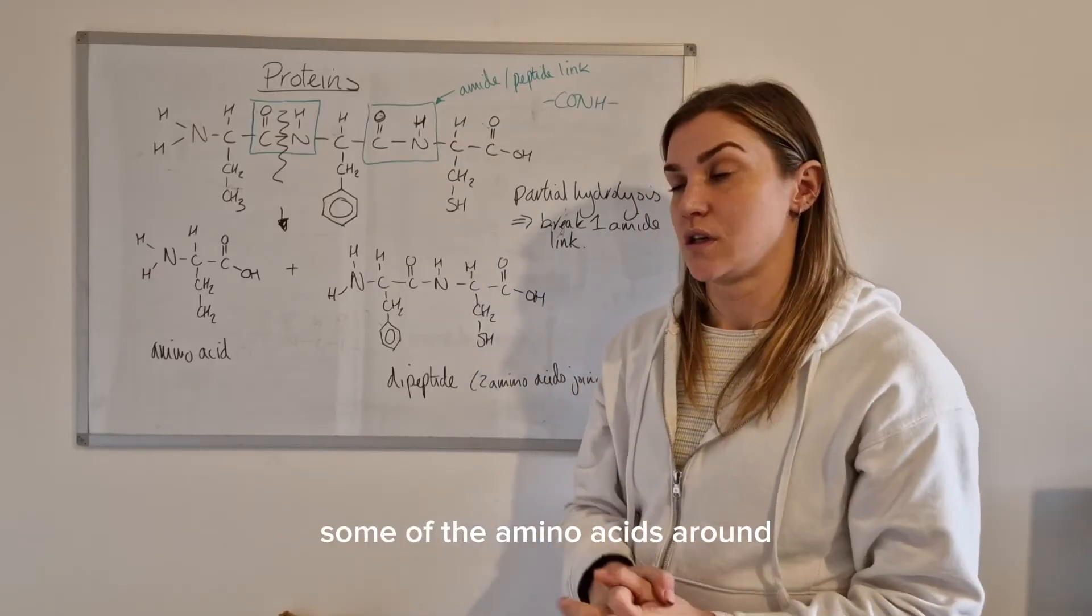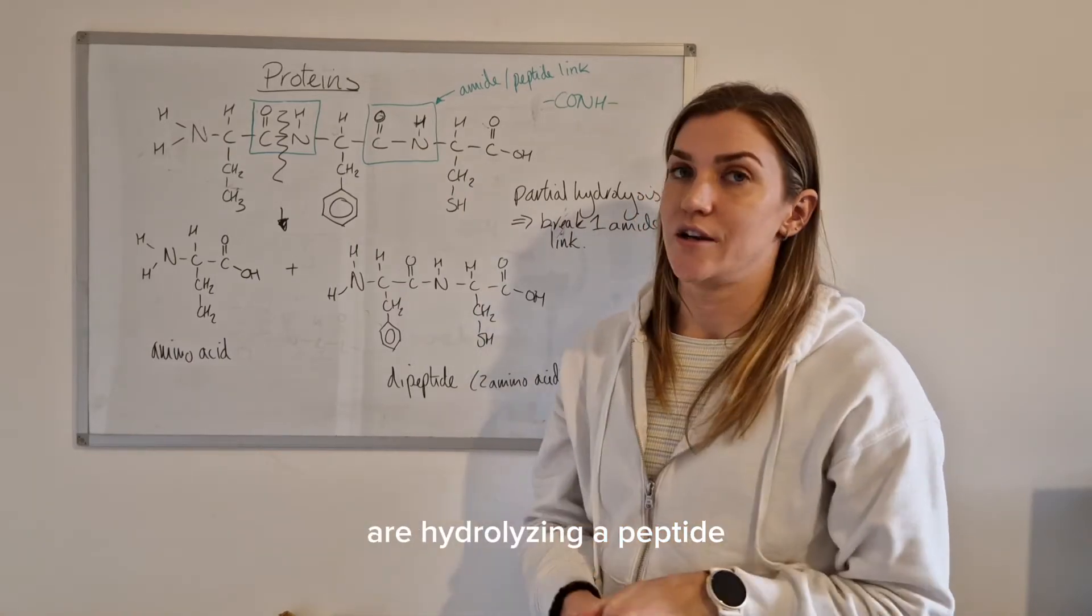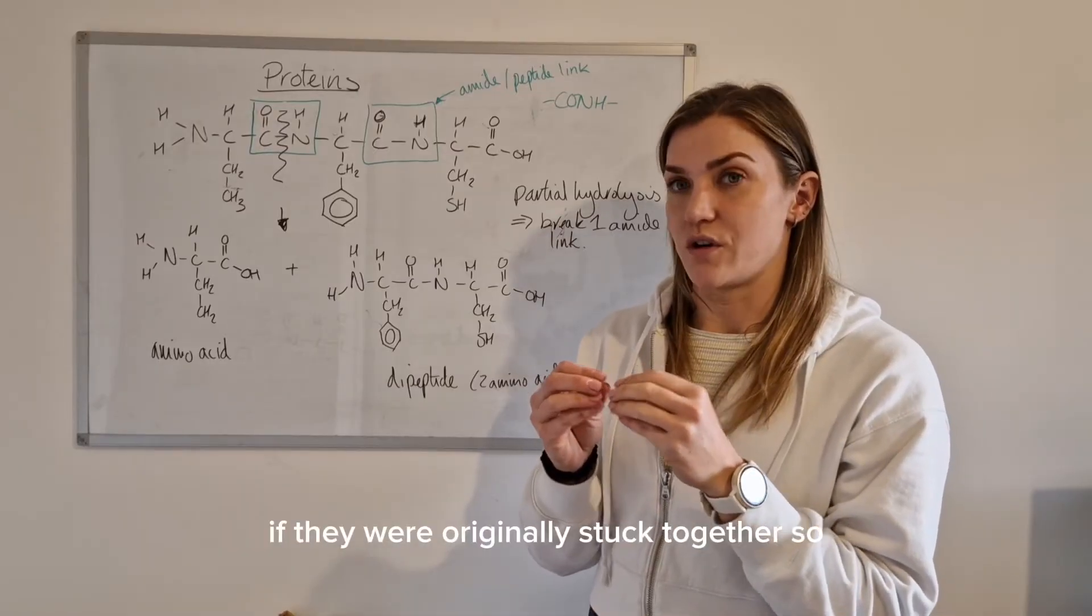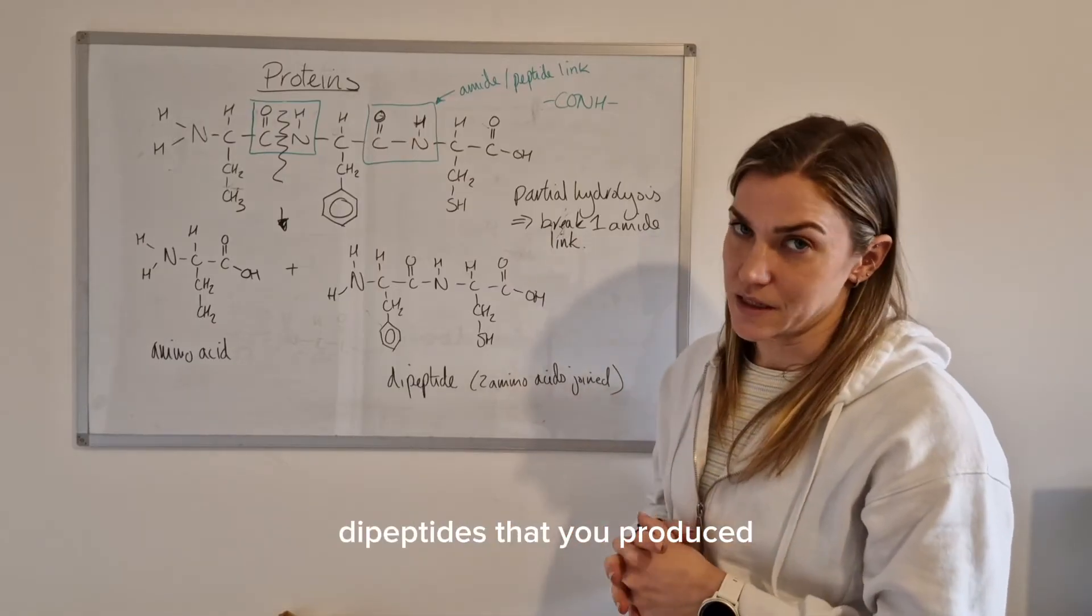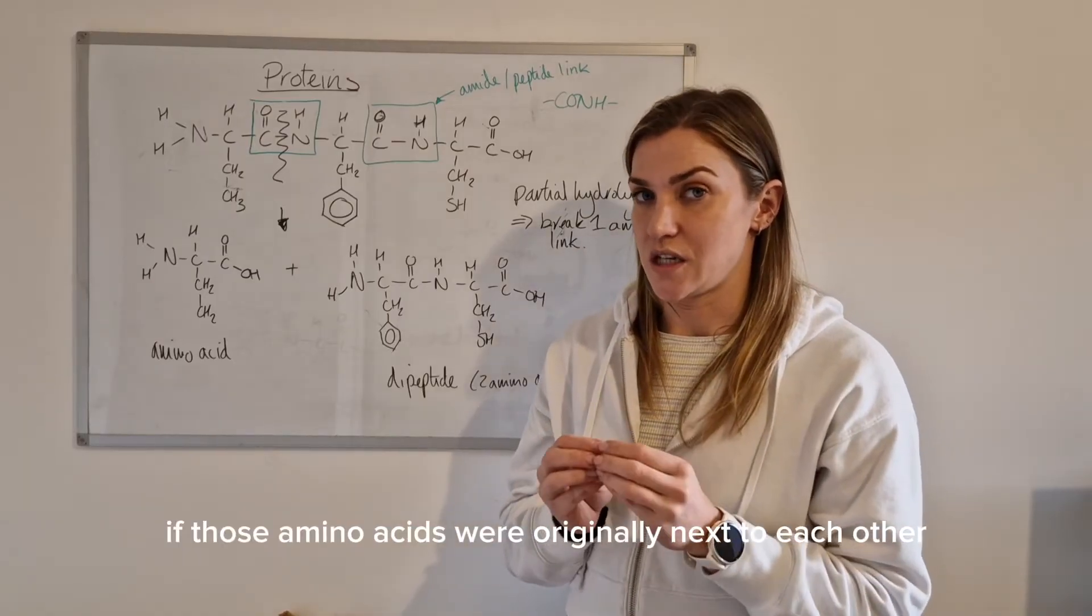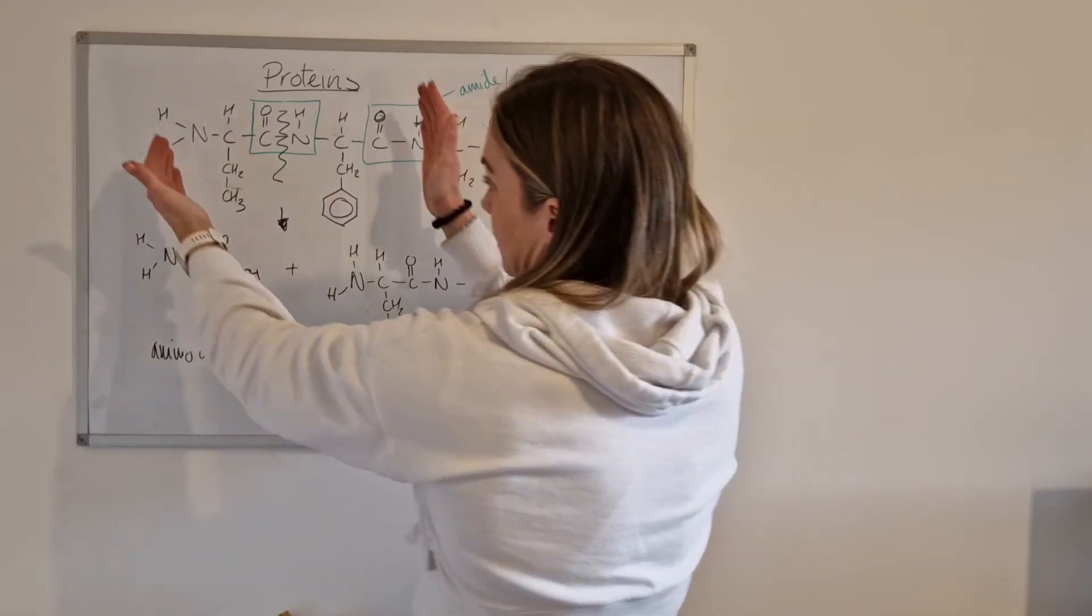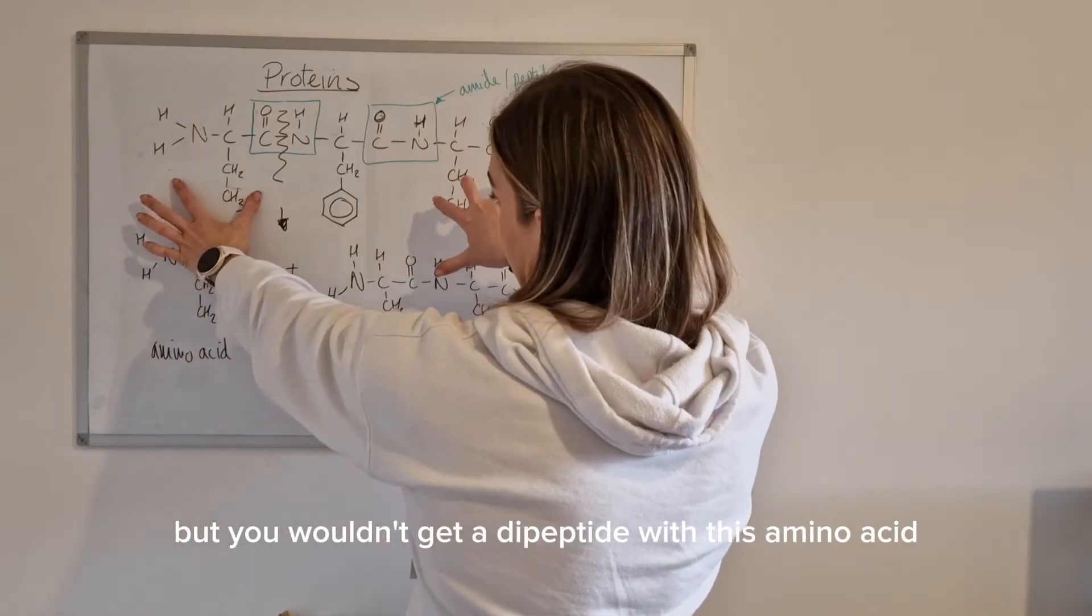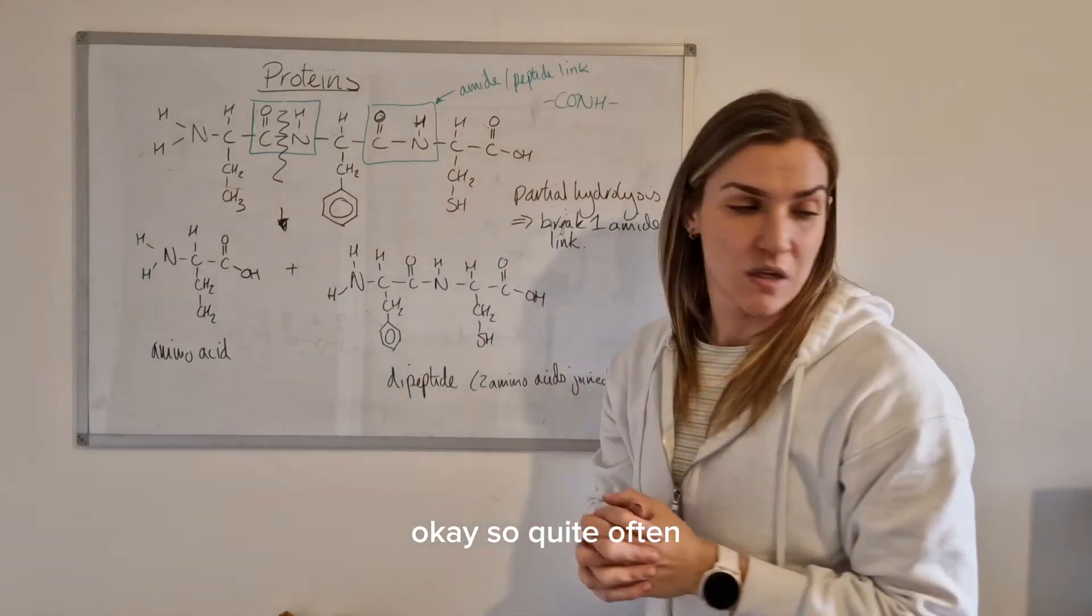The other thing is that if you are hydrolyzing a peptide you can only get amino acids stuck together if they were originally stuck together. So if you hydrolyze a protein and you're looking at a combination of dipeptides that have been produced you can only get a dipeptide if those amino acids were originally next to each other in the chain. So what I mean by that is this could be a dipeptide, this could be a dipeptide but you wouldn't get a dipeptide with this amino acid and this amino acid because they weren't next to each other in the first place. Okay so quite often you're presented with letters.